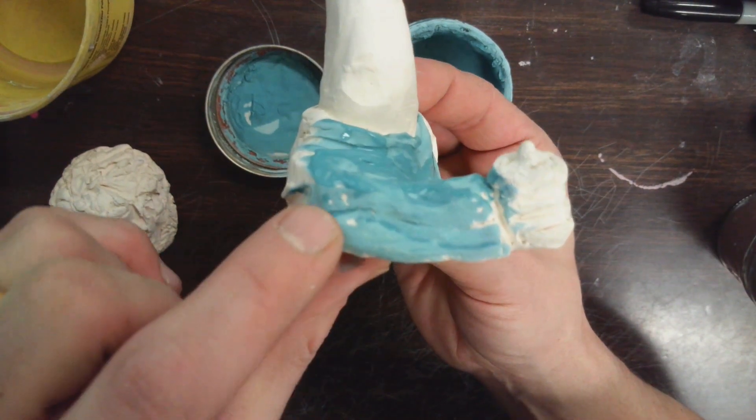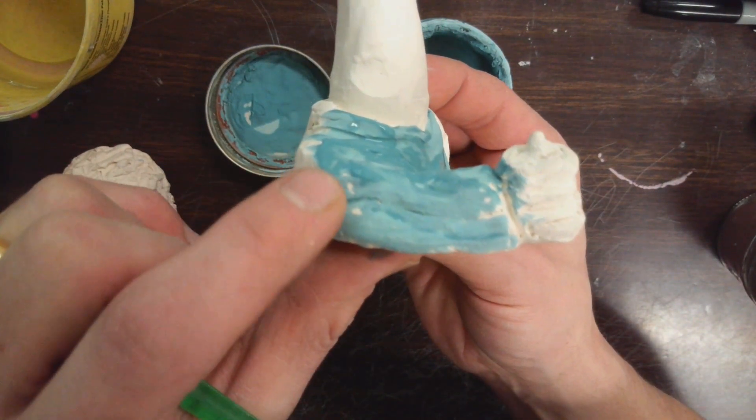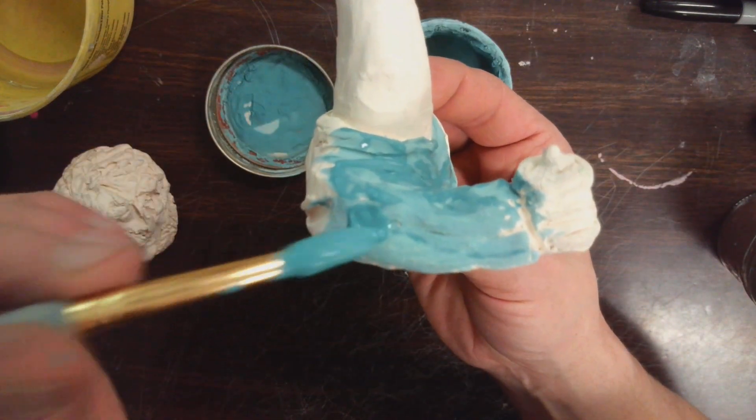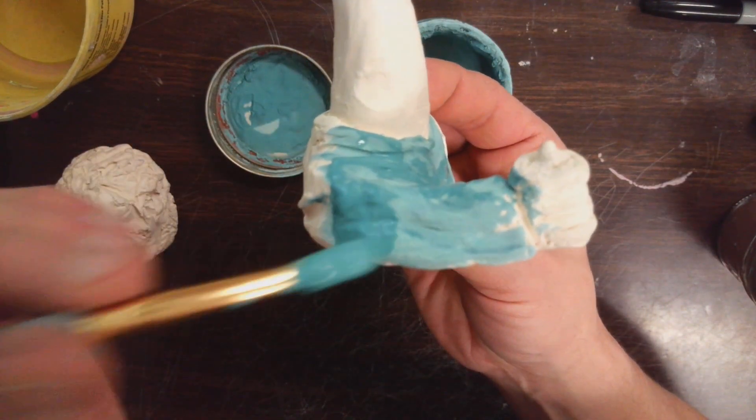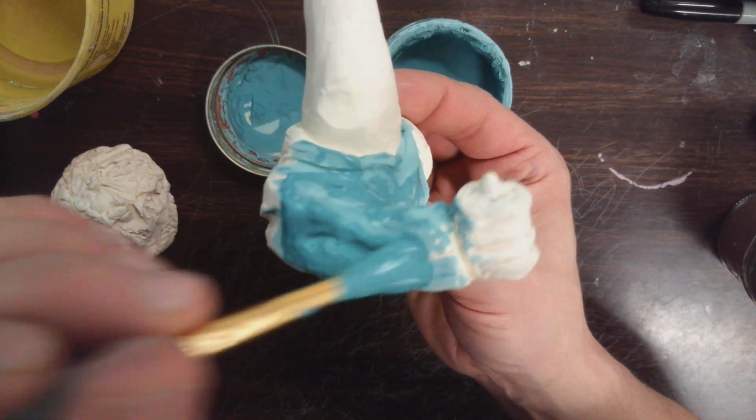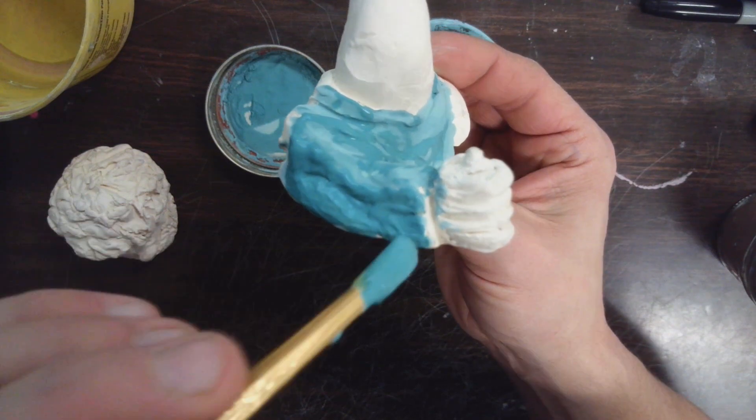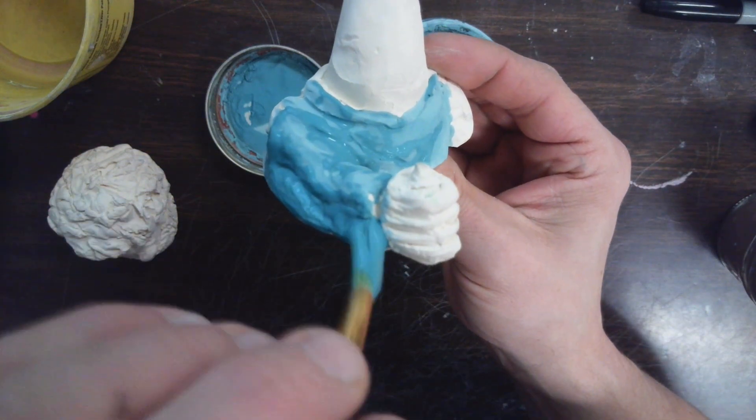You can see I missed a lot of these little dots. Now that might not seem like much, but it will really stand out if I don't go back and cover that, because when everything else is shiny, it'll be hard not to notice it. So for my second coat, I'm just looking for any little areas I missed.